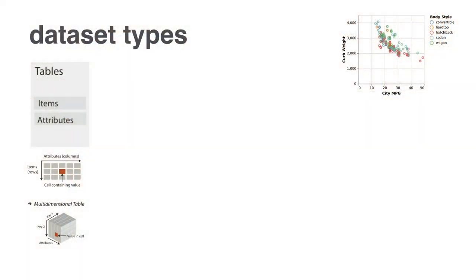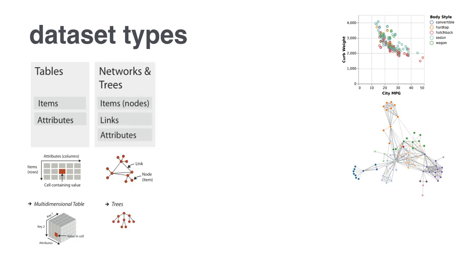At a very high level, there's a number of dataset types. The first one is tables - this is where you're going to have a set of items, which we typically think of as the rows, and attributes, which we think of as the columns. These things could be multidimensional. We represent them with things like scatter plots, bar charts, line charts, and so on. Another really common type is networks and trees, where you have nodes with some sort of relationship between them that we often represent as edges. A node-link diagram is a really common way to look at this.